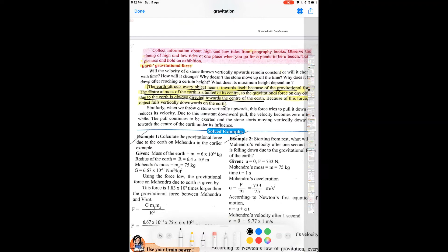We know that whenever we throw any object up, it stops at a certain height. What does it indicate? It indicates that as the object goes up, its velocity goes on decreasing. Finally, at the maximum height, its velocity becomes zero. When its velocity becomes zero, it starts moving vertically downwards.